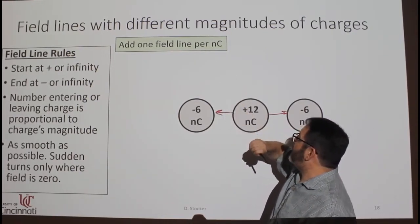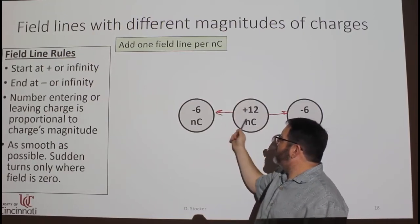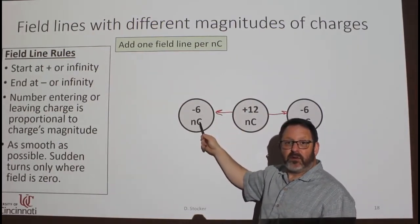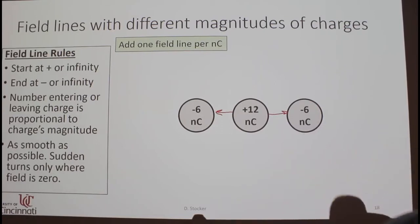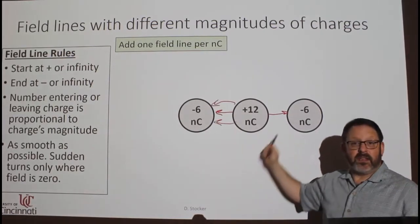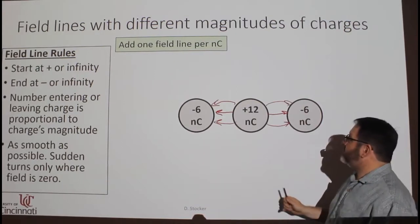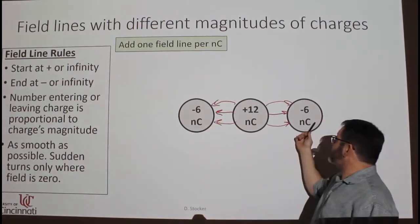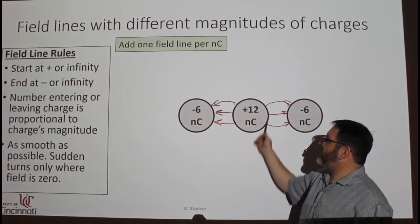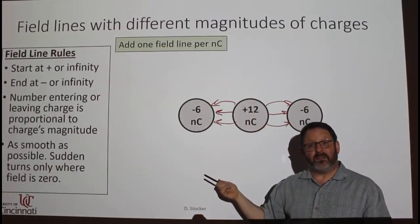It says add one field line per nano coulomb. This looks similar to what we had before, where we added more lines in there. We can do the same thing here. So now, each of these has three, and this one has six. We need to draw twice as many.